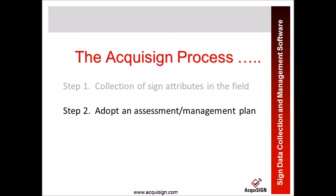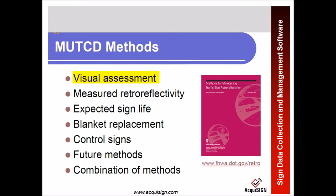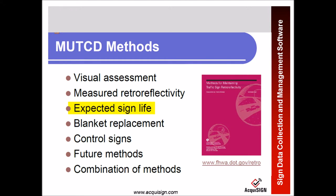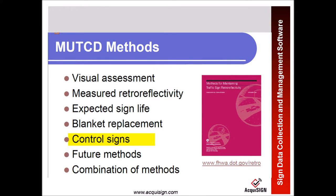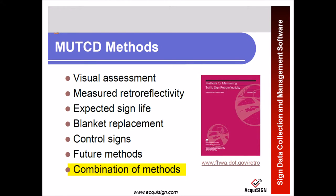The second step is to adopt an assessment and management plan. The MUTCD retro reflectivity requirements mandate that by 2014 an assessment or management method is in place, designed to maintain regulatory and warning sign retro reflectivity. Our system can be used in the assessment part using visual assessment or measured retro reflectivity, or if you're doing the management portion: expected sign life, blanket replacement, use of control signs, or any other future methods backed by an engineering study. Several of our customers are using a combination of these methods.